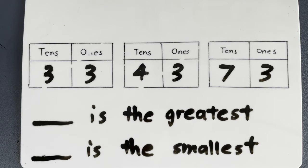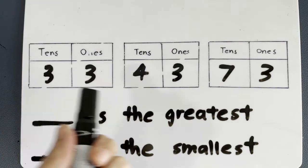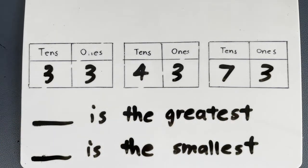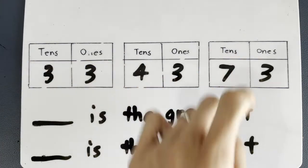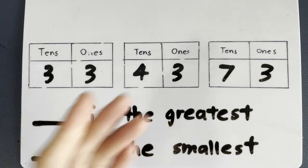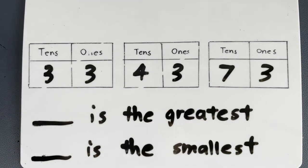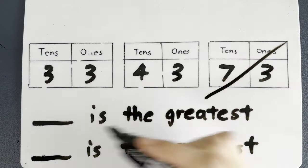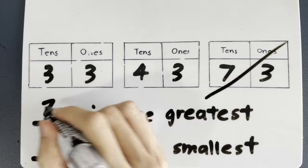Let's do more questions now. In this question we have three numbers again: 33, 43, 73. Which number is the greatest? So are we going to look at the tens or the ones? It is the tens. So look at the tens digits here, here, and here. Which number is the greatest — is it 3, 4, or 7? It's 7. So 73 is the greatest.